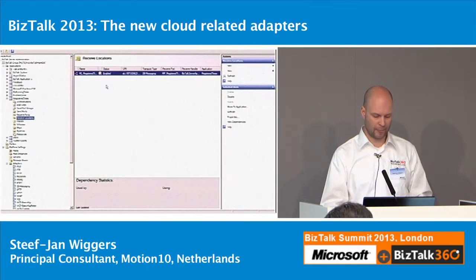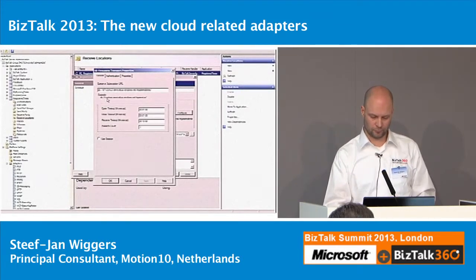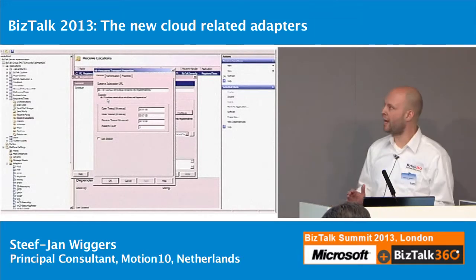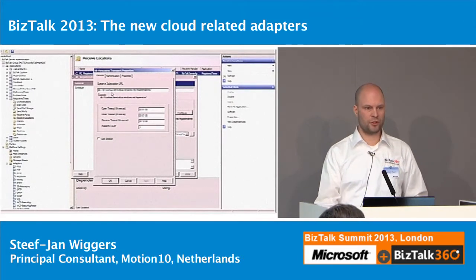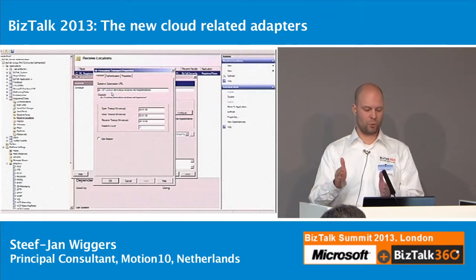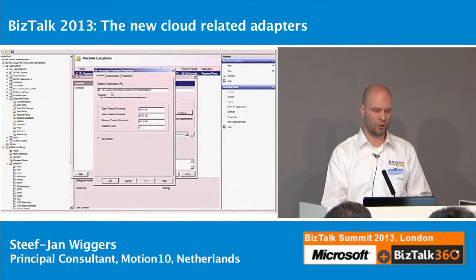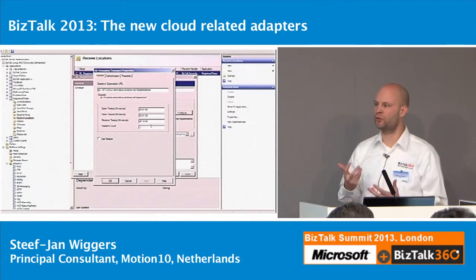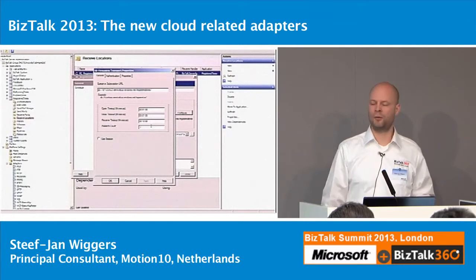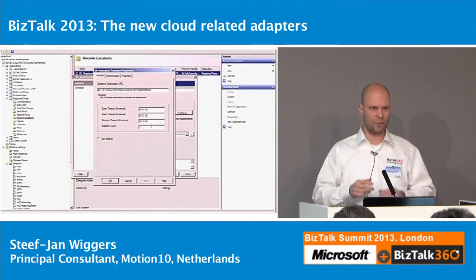I've got an application, I've got a receive port, and within the receive port I have a receive location. Within the receive location I just choose the Service Bus messaging adapter and click configure. What you'll see first is the address of the queue — so you have the namespace, in this case btuk-nl.servicebus.windows.net, and then the name of the service, which is the queue — the registrations-time queue, which is where all the messages are sent to. You've also got some other characteristics, like the prefetch count, which lets you determine the rate of messages you want to pick up and process through BizTalk. I did some tests and the latency is pretty low.